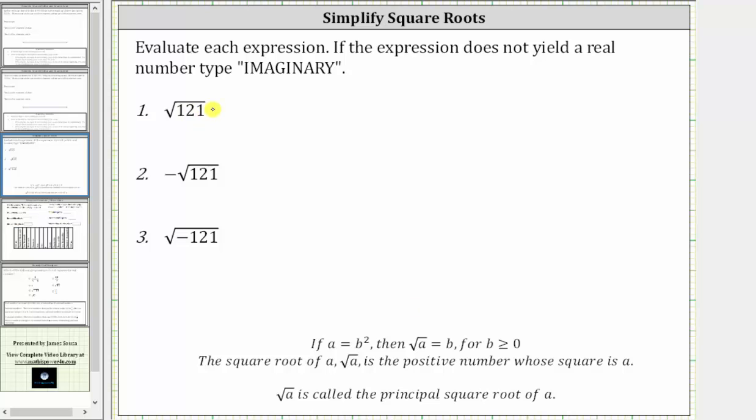Since 121 is a perfect square, this simplifies perfectly. 121 equals 11 times 11. So let's write this as the square root of 11 times 11, which we can also write as the square root of 11 squared. And since 11 squared equals 121, the square root of 121 equals positive 11.